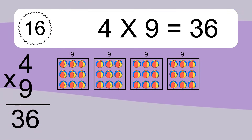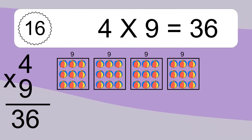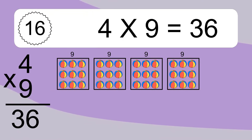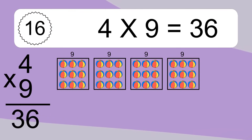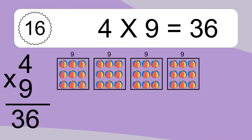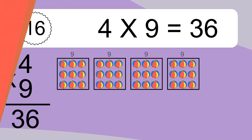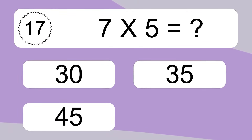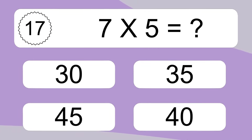4 times 9 equals what? We have 4 boxes and each box has 9 colorful balls inside. If you count all the balls in all the boxes together, you will have 4 times 9 balls. This equals 36 balls.